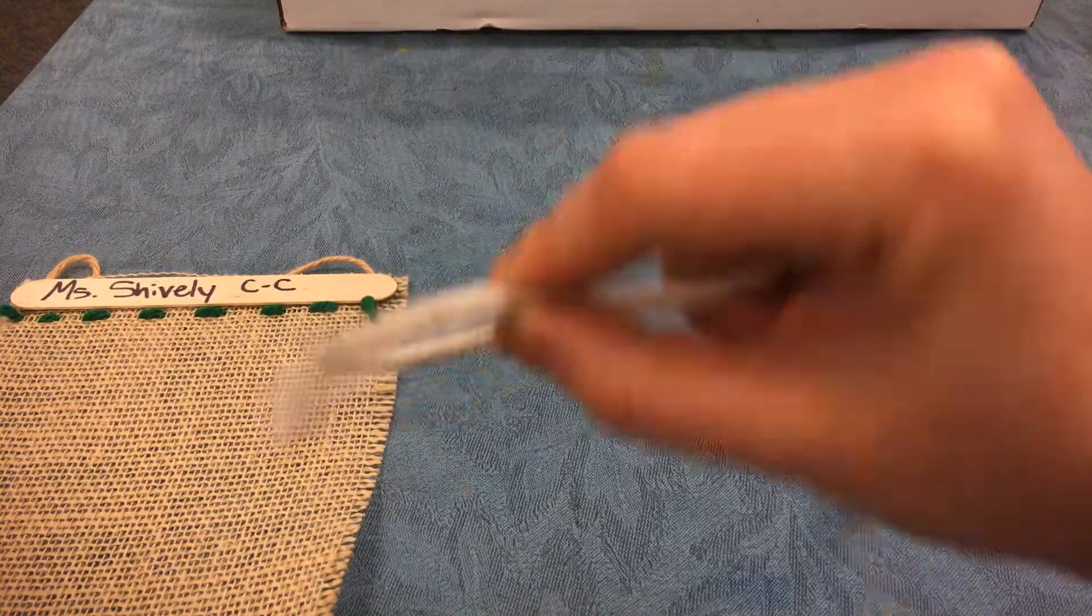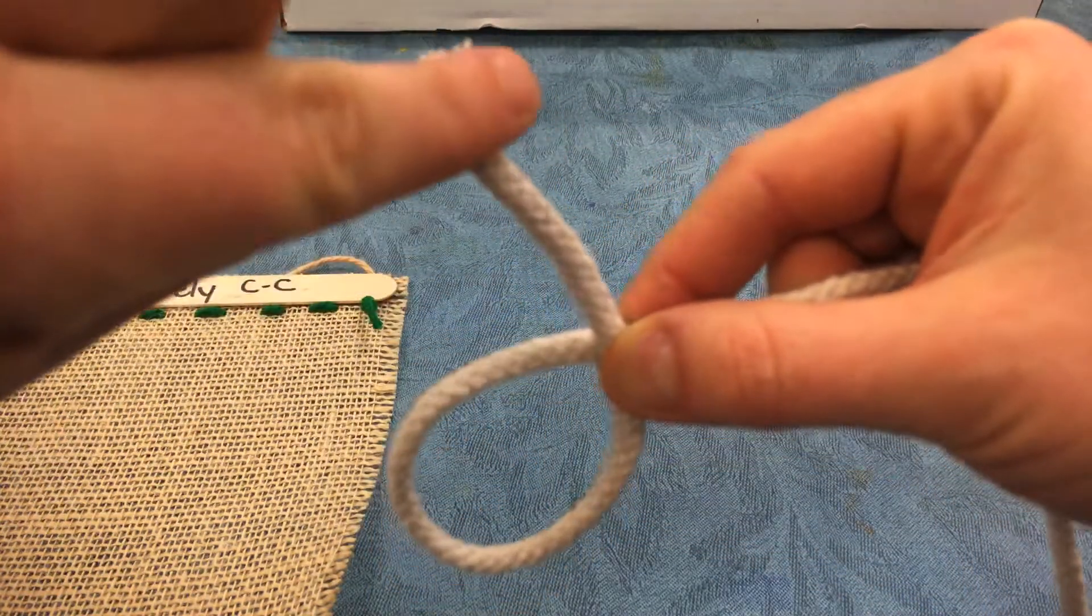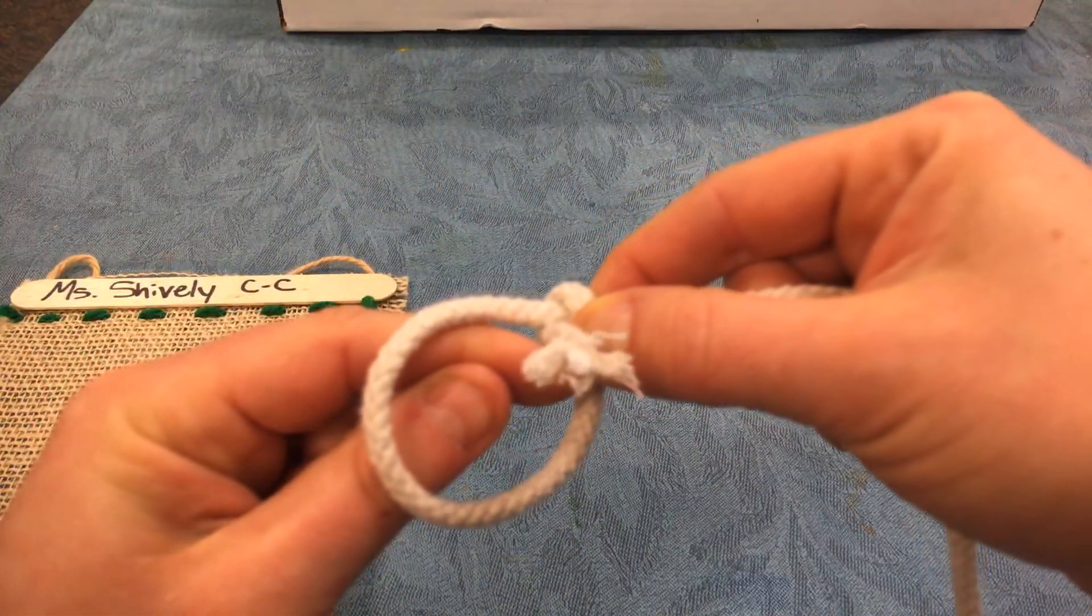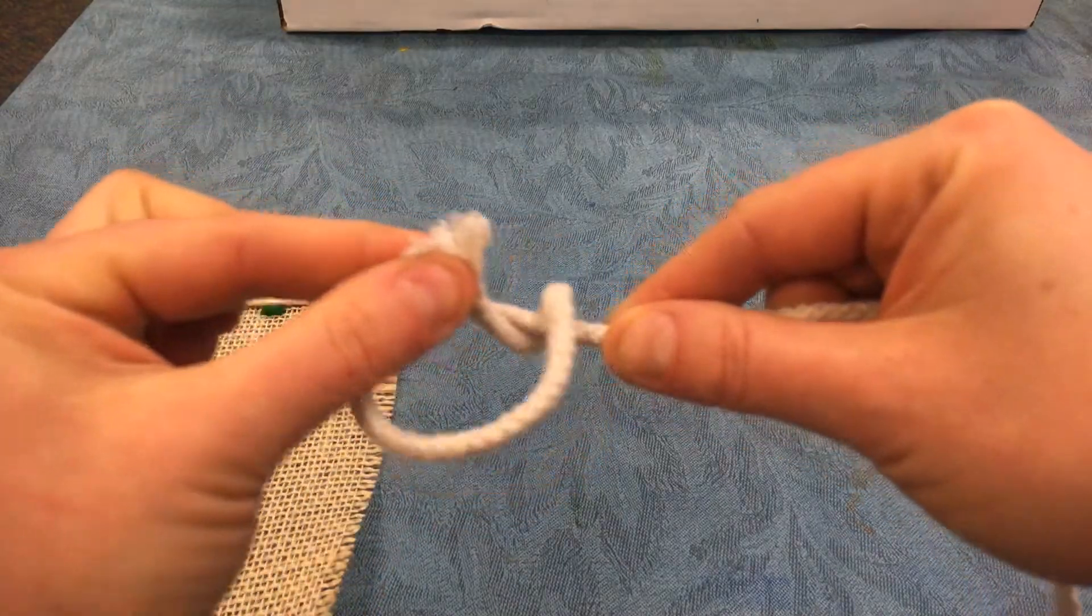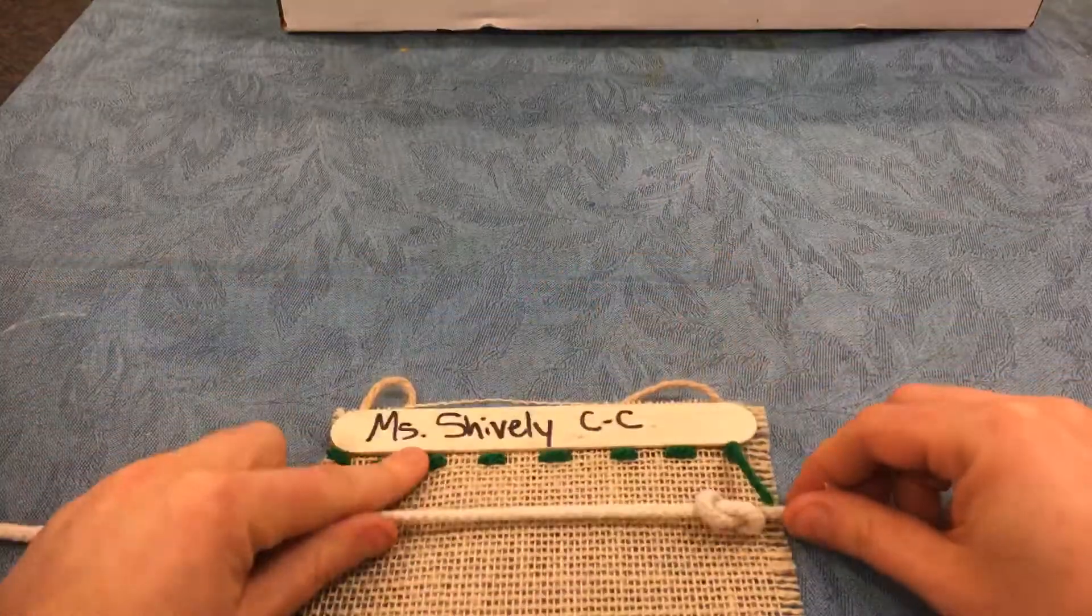Look, I'm holding it in just one hand. I'm pinching it. Then I'm taking this tail end and I'm going around and through. Then I pull it. That makes that stopper knot that we're trying to make.